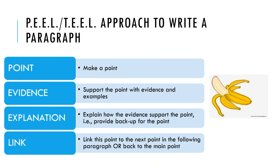A good approach to use is the PEAL approach: P stands for making a point, E is supporting the point with evidence and examples, A is explaining how the evidence supports the point — providing backup, and L is linking this point to the next point in the following paragraph or back to the main point. This way of structuring paragraphs helps make sure your paragraph holds together — it has scaffolding. Your paragraph starts with a topic sentence, makes a point, provides evidence, explains, and links to the next paragraph or back to the main idea. The beginning sentence of your next paragraph can also link to the previous paragraph.